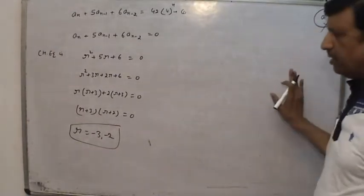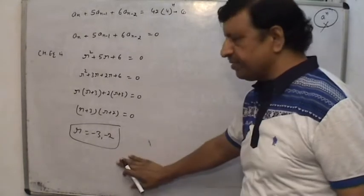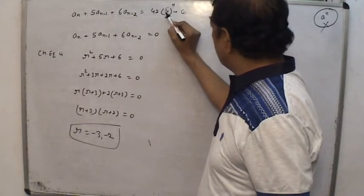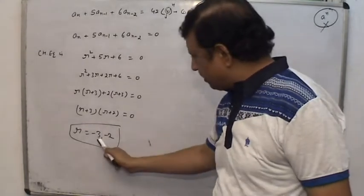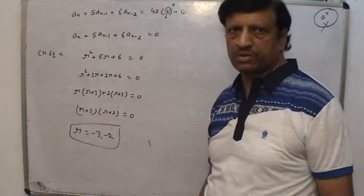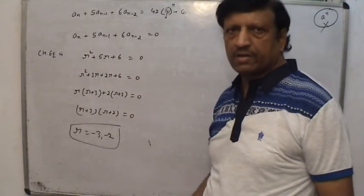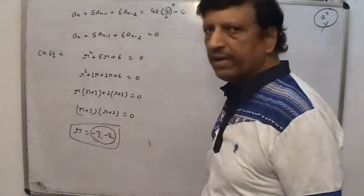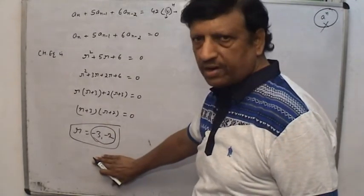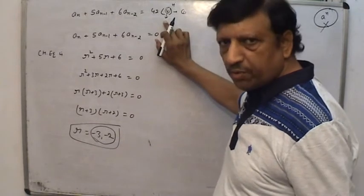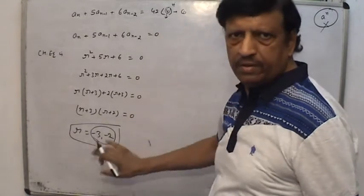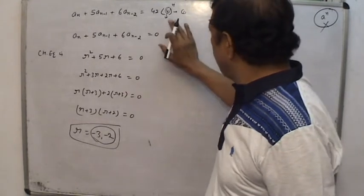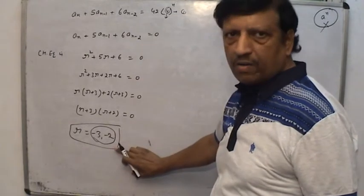In such problems it is very necessary to find these characteristic roots, because we need to check whether the value a equals 4 exists as a characteristic root or does not exist. For both cases there are different particular solutions. Here we see 4 is not part of any of the two characteristic roots, meaning the characteristic roots are different from a.